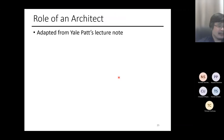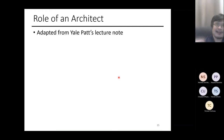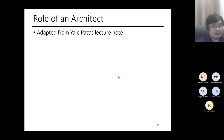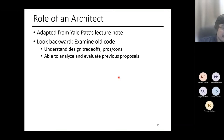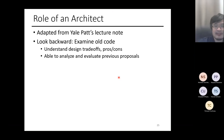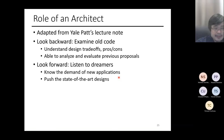The role of an architect - this is adapted from Yale Patt, a professor at UT Austin and my grand-advisor. He makes a really good observation: our role is first to look backward - examine old code and understand designs, be an expert at analyzing and evaluating previous proposals. We also need to look forward - listen to dreamers. You guys are the dreamers for us, because we need to know the demands of new applications.